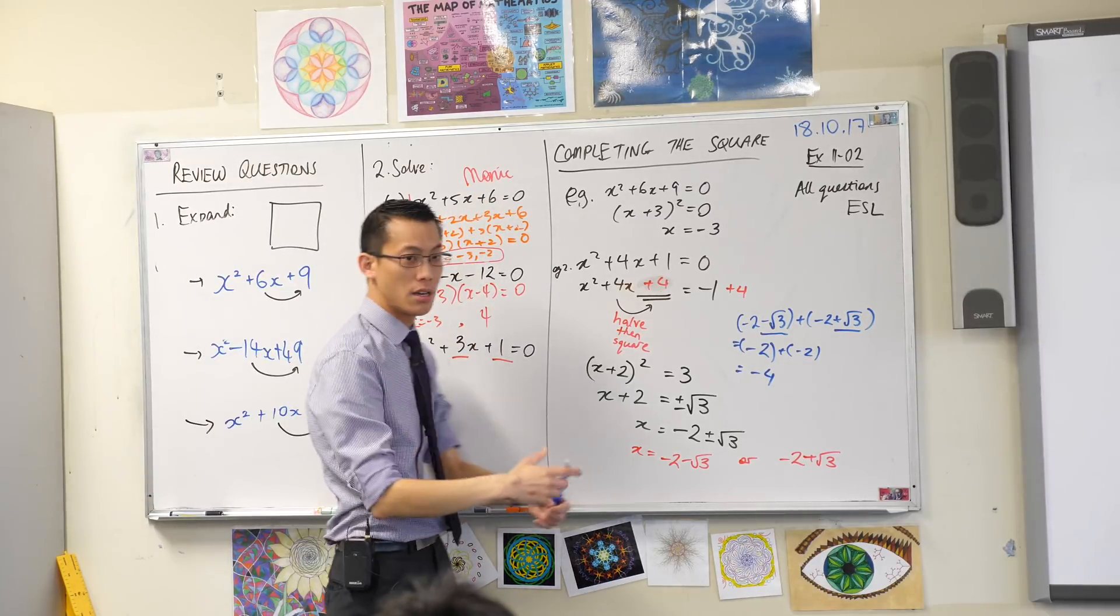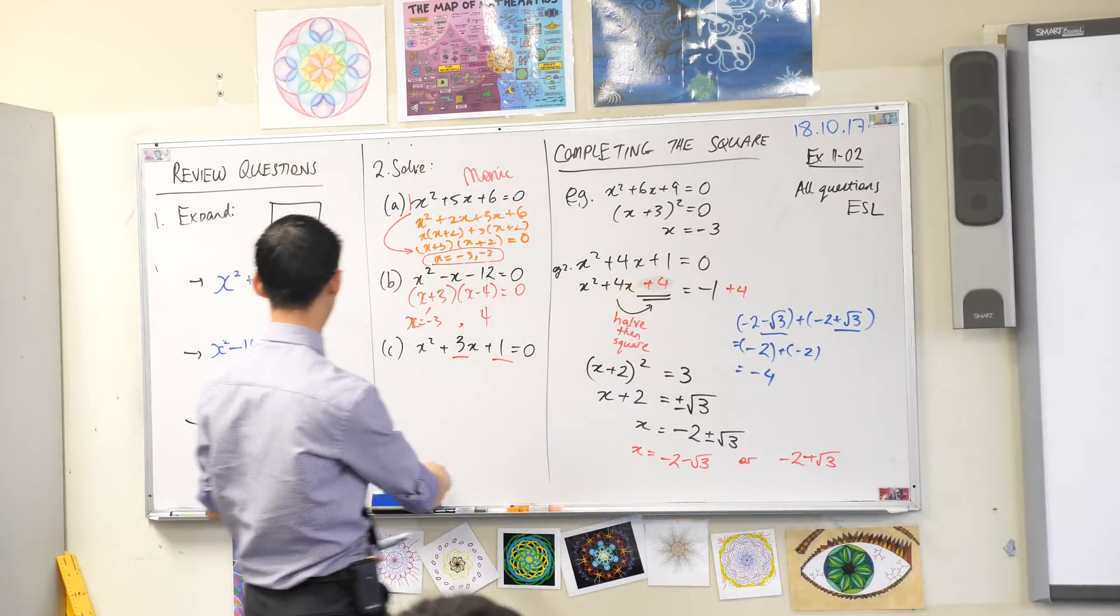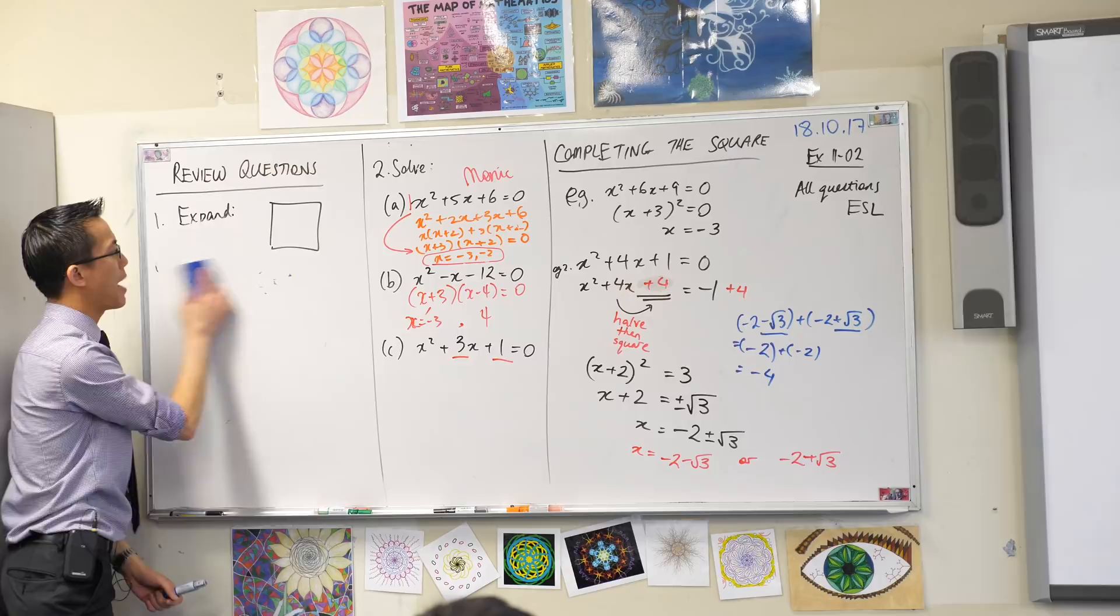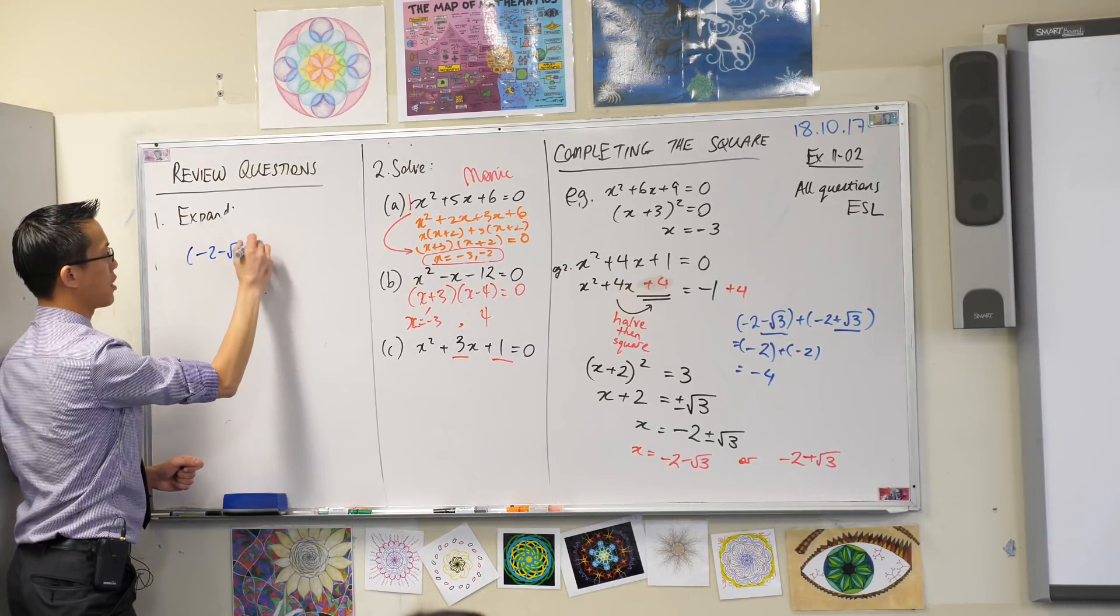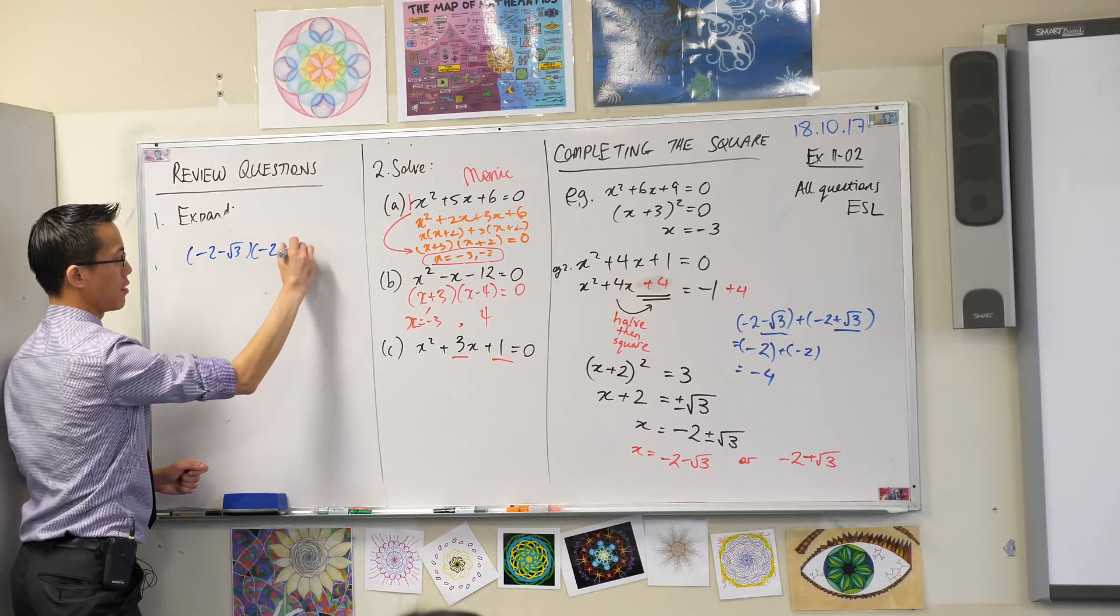If you multiply them, you'd get 6. Let's see what happens if we multiply. Help me out.